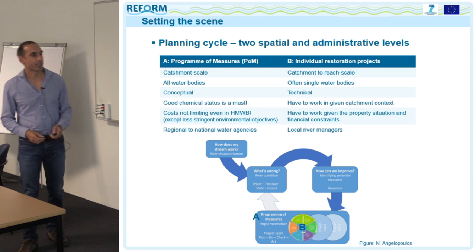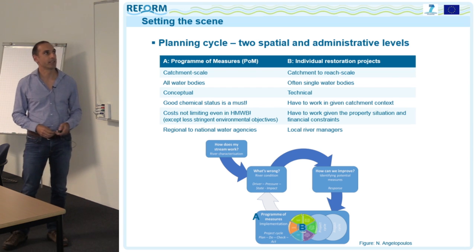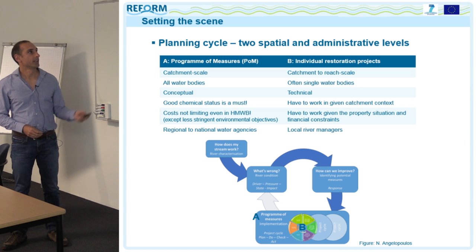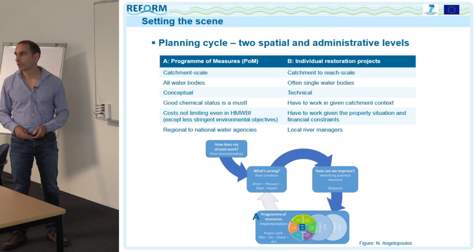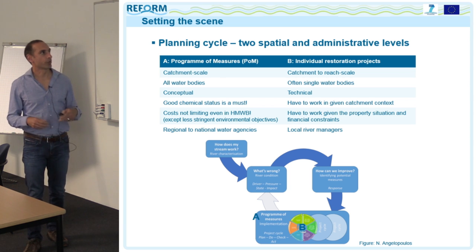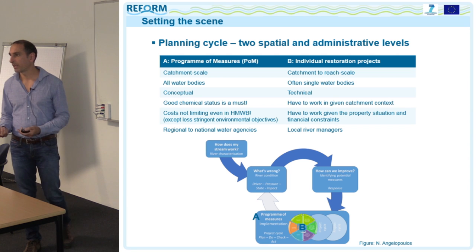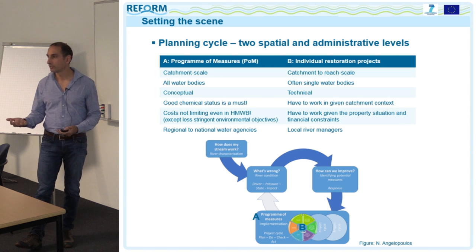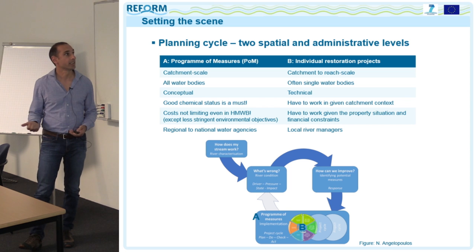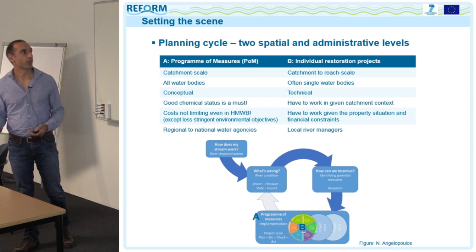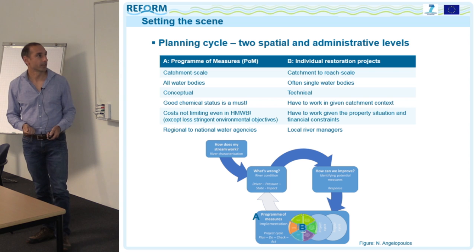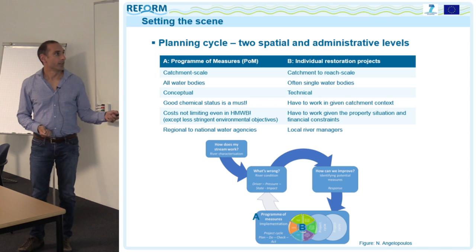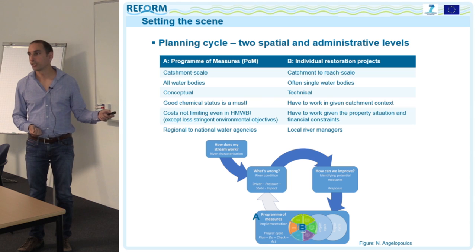The selection of measures can be done at two spatial and administrative levels. The first is the program of measures, as done for the Water Framework Directive — a more conceptual planning where all water bodies from a catchment are included. According to the WFD, good chemical status is a must, and costs must be considered at this step. This is usually done by regional or national water agencies.